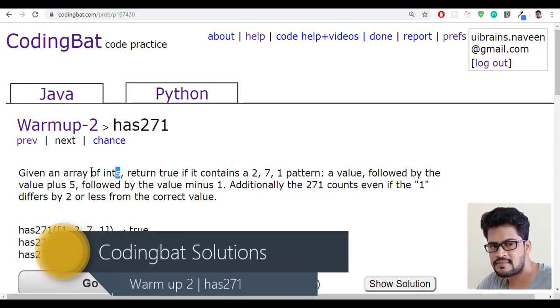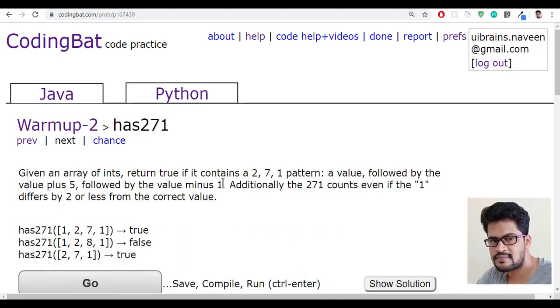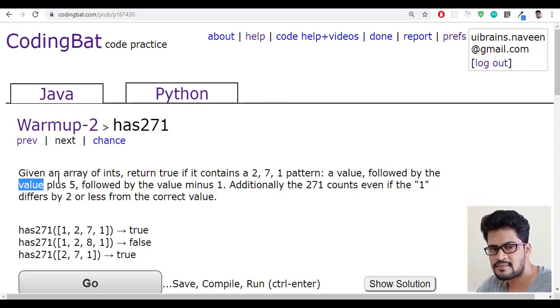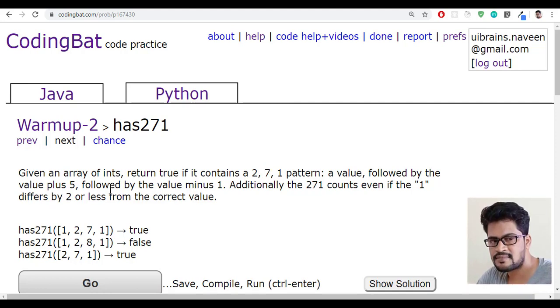Given an array of integers, return true if it contains a 271 pattern. We have to find out if this array has the 271 pattern. So what exactly is the 271 pattern? A value followed by the value plus 5. The first value and next value will be first value plus 5, and followed by the value minus 1, so this will be x minus 1. Additionally, the 271 counts even if the 1 differs by 2 or less from the correct value.